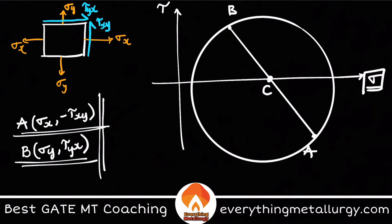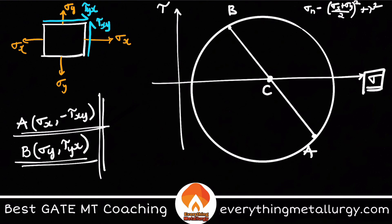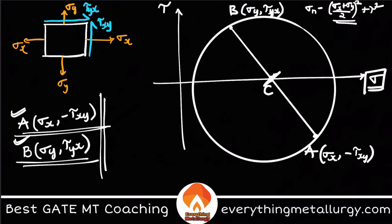Now let's verify this with the equation. The equation was (σn − (σx + σy)/2)² + τ² = r². The center of such a circle is at (x₁, 0), which gives us the center at ((σx + σy)/2, 0). Looking at our plotted points, the midpoint C of A and B is ((σx + σy)/2, 0) — exactly matching the equation. So the center is confirmed.